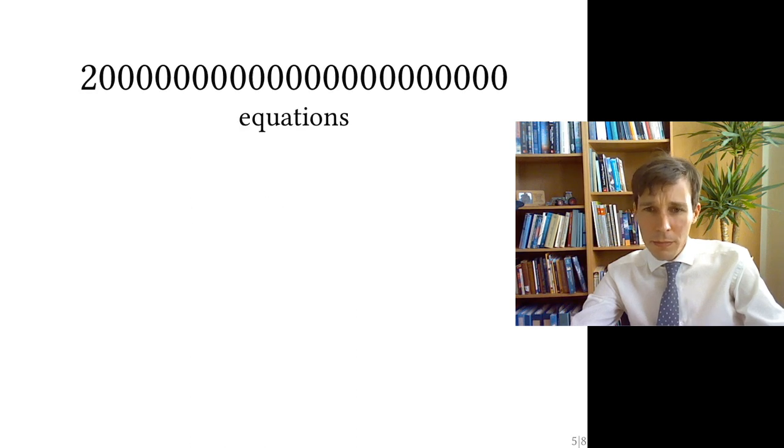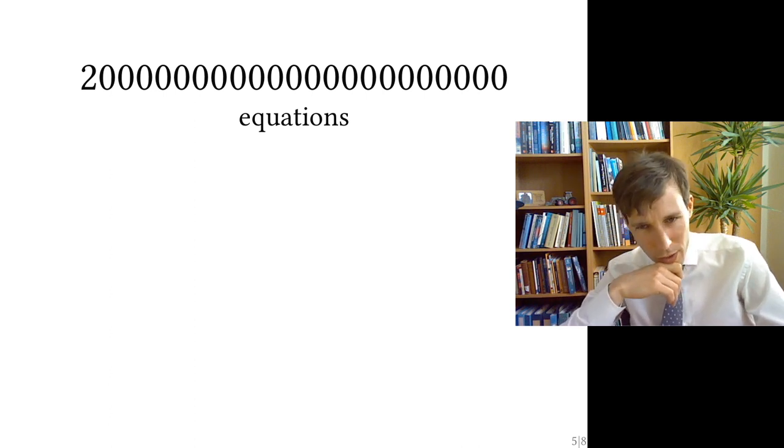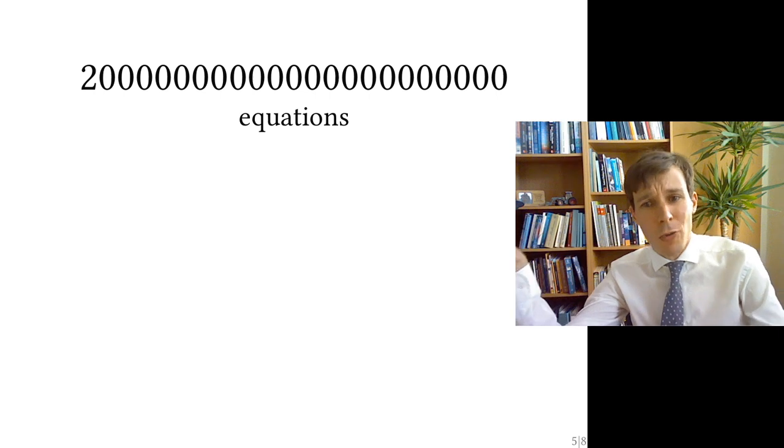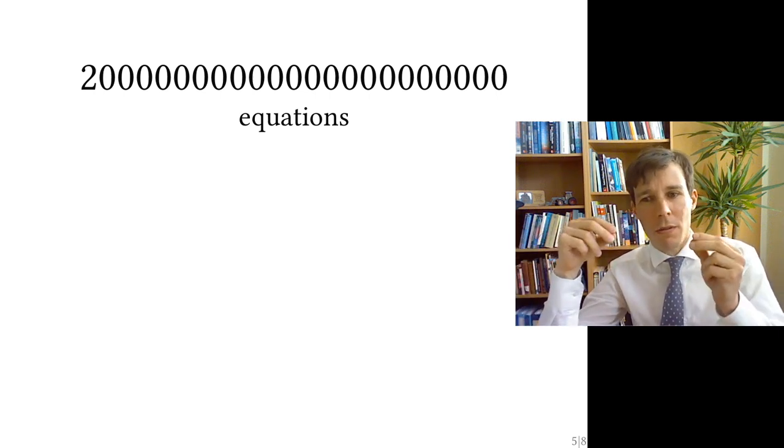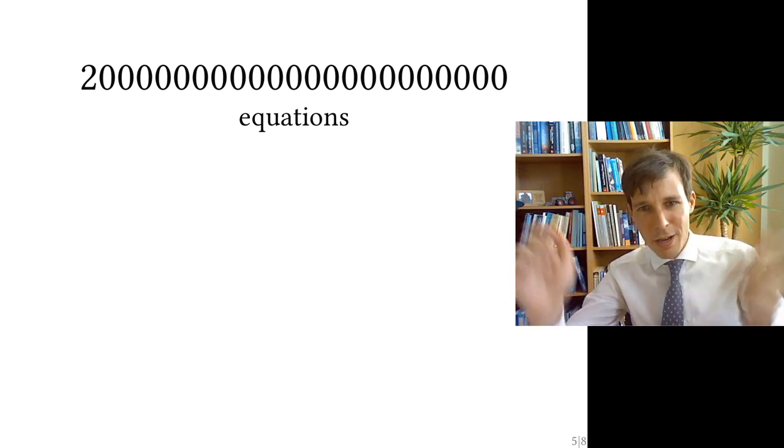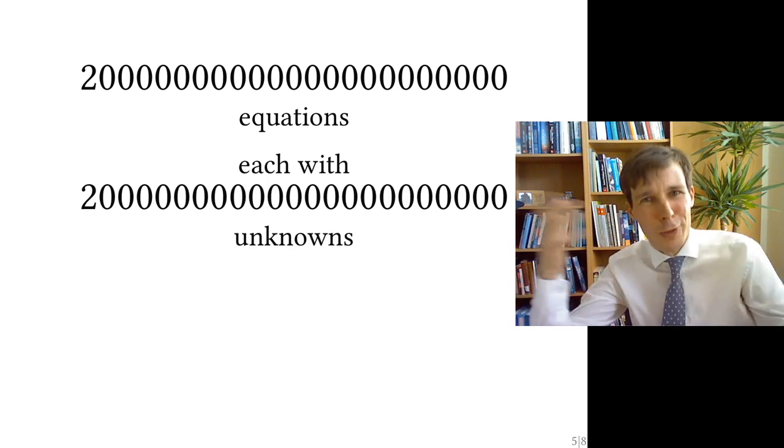If you want to solve for the movement of those 2×10^22 molecules, then you need to solve 2×10^22 equations of movement. And since all those molecules' position and acceleration depend on all of the others, then each of those equations has 2×10^22 unknowns.